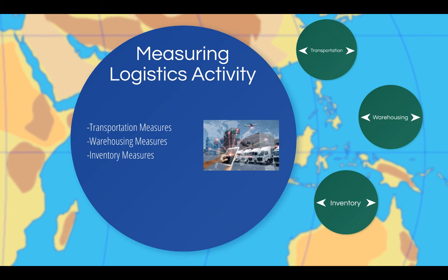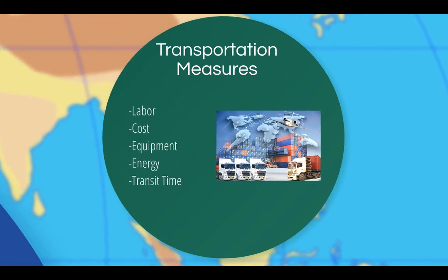In logistics, we use measures to determine how well we are managing logistics activities. Typical logistics activity measures include transportation measures, warehouse measures, and inventory measures. The major transportation measures focus on labor, cost, equipment, energy, and transit time. The diversity of equipment types, sizes, and products carried will complicate performance measurement in this area. Measurements include return on investment in transportation equipment, outbound freight costs, transportation labor productivity, on-time deliveries, and in-transit damage frequency.